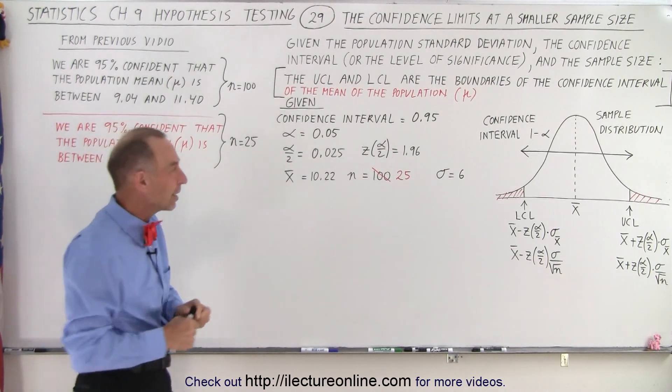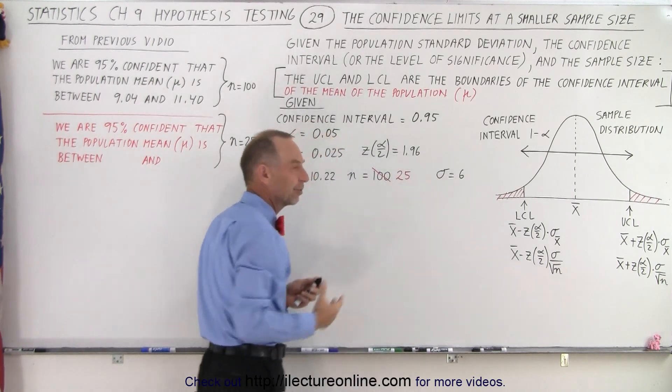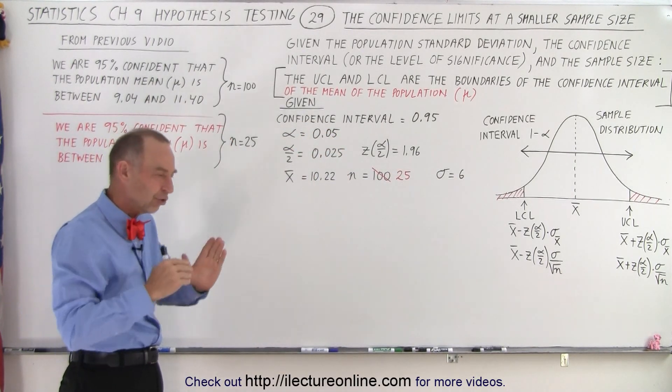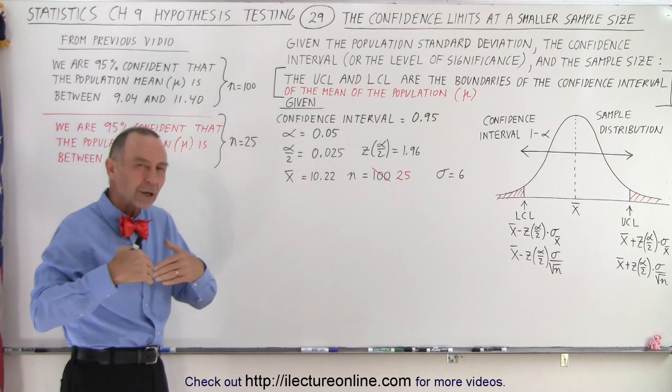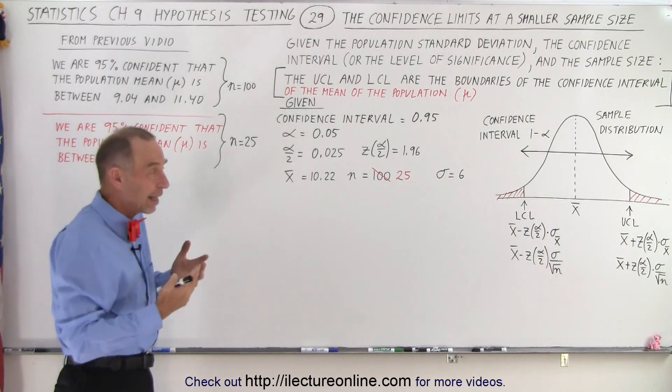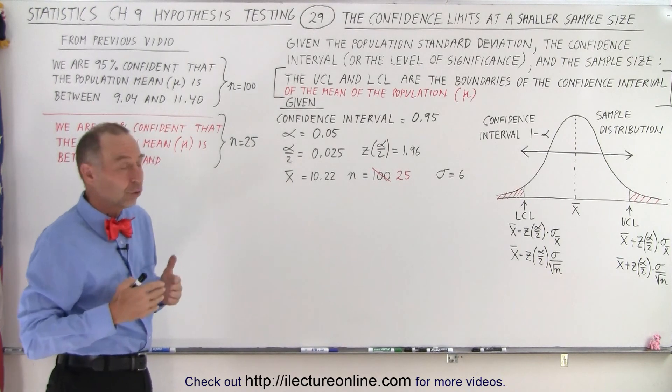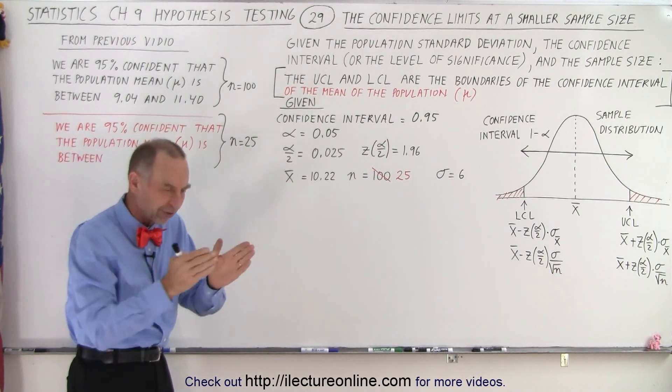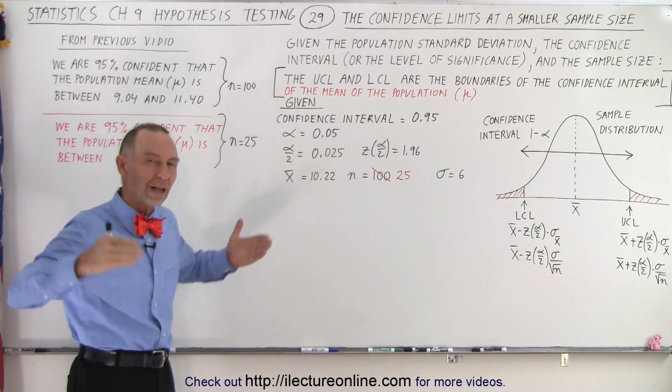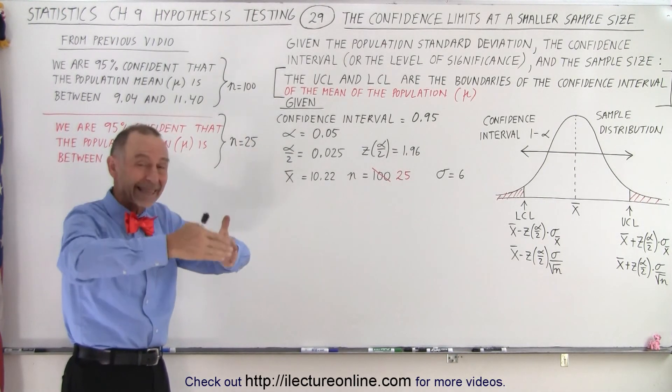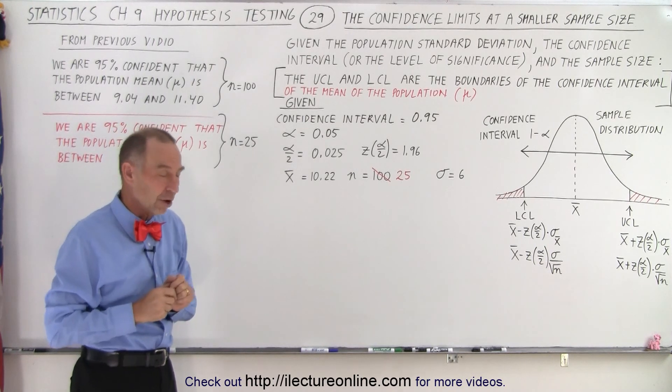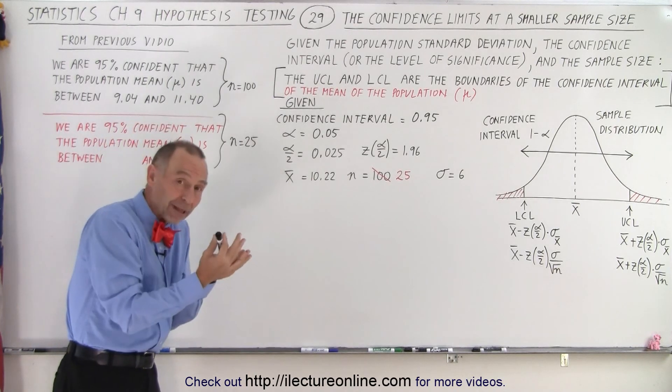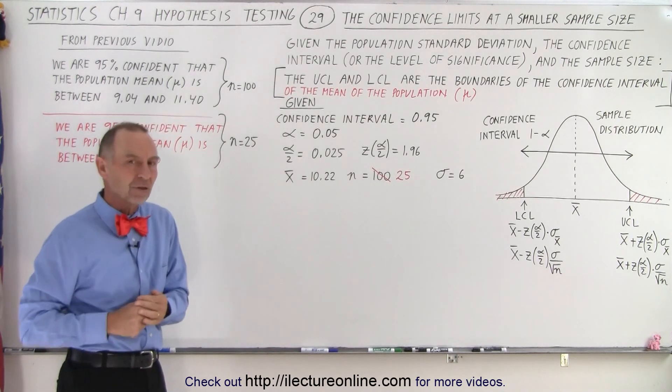But what if we put the confidence level back to 0.95, but now we're going to shrink our sample size? With a smaller sample size, we're not going to be as confident that we have the right limits. So to have a confidence level of 0.95 with a smaller sample size, we would expect the limits to increase to have a wider range where we think the mean of the population will fall. Again, this is all about taking a sample and then inferring from that sample what we think the mean of the population will be.